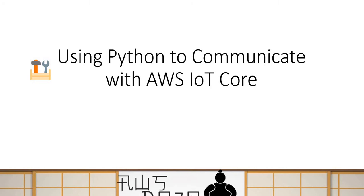Hello everyone, welcome to AWS Tutorials. In AWS Tutorials we use workshops and exercises to learn about AWS services. These workshops and exercises are published to our website aws-dozo.com, and you can use them to implement certain scenarios and learn about AWS services. Today we are going to talk about how you can use Python-based code using the AWS IoT Device SDK to communicate with AWS IoT Core.